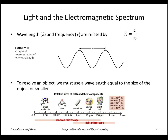Another factor influencing the size of objects we can see is the wavelength of light. The wavelength of light is related to the frequency through the speed of light. Through the principles of optics, we know that we have to use a wavelength equal to the size of the object or smaller if we want to see it. With standard light microscope methods we can see an object down to about one micrometer, roughly the size of a bacteria. To see a virus or smaller, we need a shorter wavelength such as that used in an electron microscope.